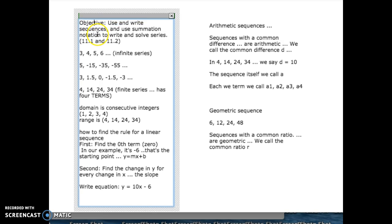So what's a sequence? Well, this is a sequence: 3, 4, 5, 6 dot dot dot means it's an infinite sequence. Now 5, negative 15, negative 35, negative 55 is another sequence. So they don't have to go up, they can go down. They can have decimals. This one's another sequence.